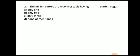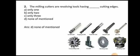Next question: milling cutters are revolving tools having cutting edges — only one, only two, only three, or none of the mention. The answer is none of the mention. As we already discussed, there can be any number of teeth. It is not specified as only one, two, or three; there may be any number of teeth depending on the diameter of the cutter.